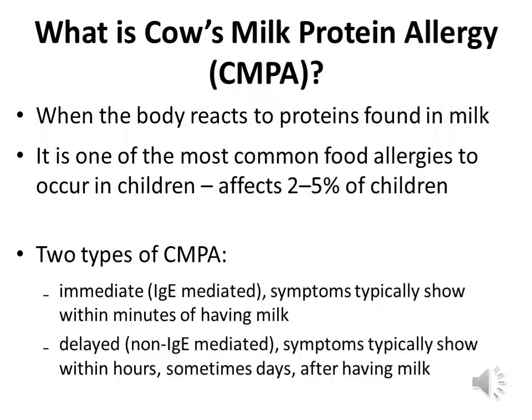Cow's milk protein allergy is when the body reacts to proteins found in milk. It's one of the most common food allergies in children, affecting around 2–5% of children, so it's quite common. There are two types: immediate reactions, where symptoms show within minutes of having cow's milk protein, and delayed reactions, which is more common, where symptoms typically show within hours and sometimes days.